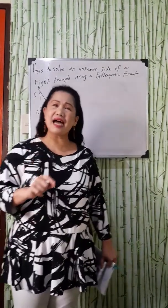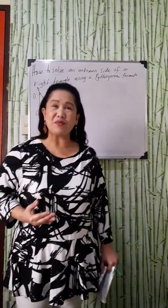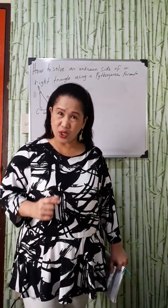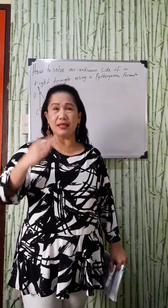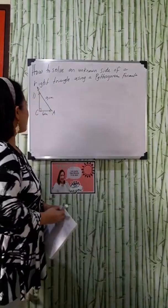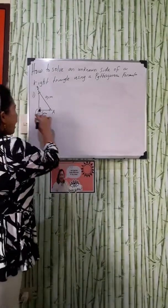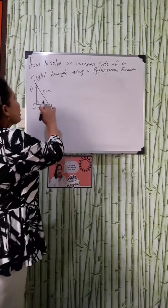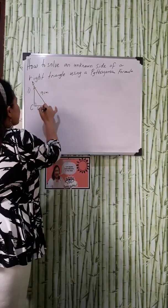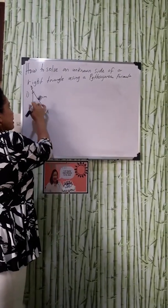Last time, I discussed how to derive a Pythagorean formula. This is a continuation where we will be using the Pythagorean formula in solving for the unknown sides. I have here a right triangle wherein the side C is 9 centimeters and side B is 6 centimeters and the unknown side is side A.